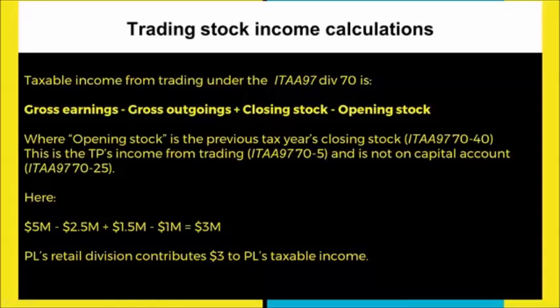Opening stock is the previous tax year's closing stock — and importantly, you cannot change that. Income from trading is not a capital gain; it's a revenue calculation, mapped out by the statute. In this scenario: earnings were $5 million, outgoings were $2.5 million, then you add back the closing stock and take away the opening stock. The result is three million dollars to add to your taxable income.